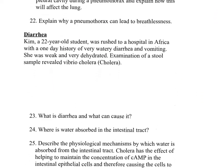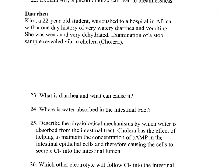The next case study is diarrhea. Kim, a 22-year-old student, was rushed to a hospital in Africa with a one-day history of very watery diarrhea and vomiting. She was weak and very dehydrated. Examination of a stool sample revealed Vibrio cholerae (cholera). Question twenty-three: what is diarrhea and what can cause it? Diarrhea refers to an increased frequency of abnormally loose feces with a higher than normal water content. It can be caused by anything that decreases transit time through the intestine — including anxiety, infection (viral or bacterial), or malabsorption such as celiac disease.